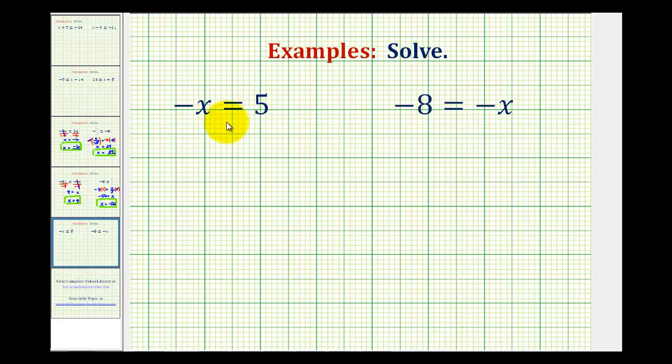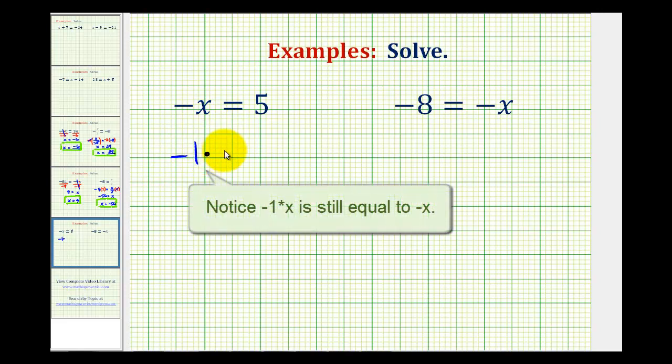Let's first think of this as negative x equals positive 5. The key to solving these types of equations is to remember that if we multiply it by 1, it's not going to change anything. What I mean by that is we can rewrite this equation as negative 1 times x equals positive 5.